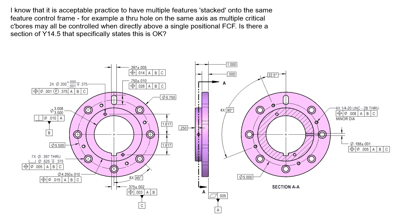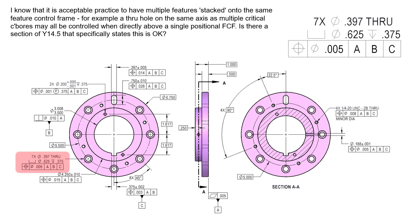So in order to talk about this, I want to pull up this example drawing. This might not be a complete drawing example — we're missing a title block and whatnot — but let's take a look at this pattern of seven features right here. We see this feature control frame is attached to a couple of size dimensions: seven times the 0.397 through hole diameter, as well as seven times the counterbore diameter of 0.625, and seven times the depth of 0.375 on all those counterbore diameter depths. This means we have seven line items to assess the through hole diameter, seven to assess the counterbore diameter, and seven to assess the depth of 0.375.